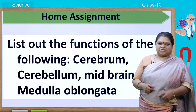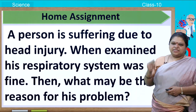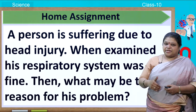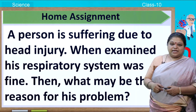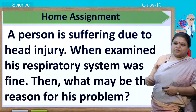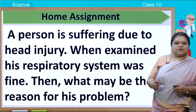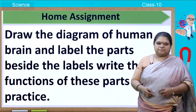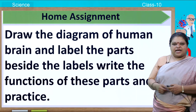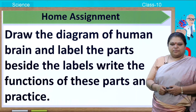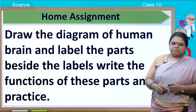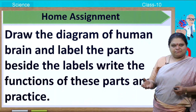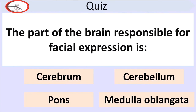Next question: a person is suffering due to a head injury. When examined, his respiratory system was fine. What may be the reason for his problem? Also, draw the diagram of the human brain, label the parts, and beside the labels write the functions of those parts, then practice.